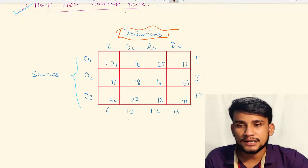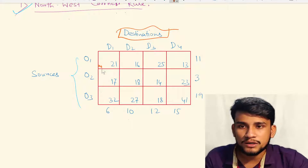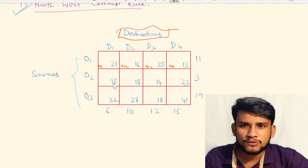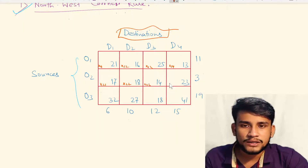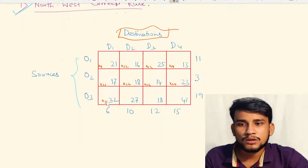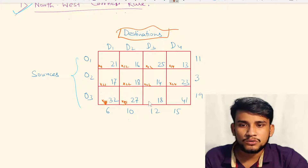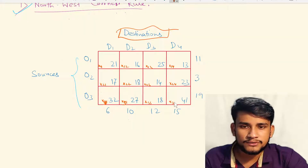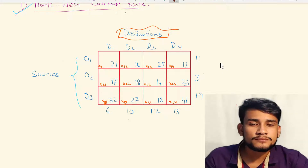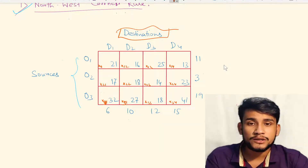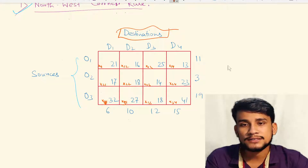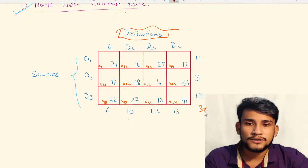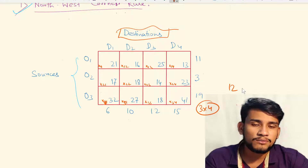Looking at the transportation table, the cells are: x11, x12, x13, x14, x21, x22, x23, x24, x31, x32, x33, and x34. There are a total of 12 variables, since this is a 3×4 matrix with m×n = 3×4 = 12 variables.